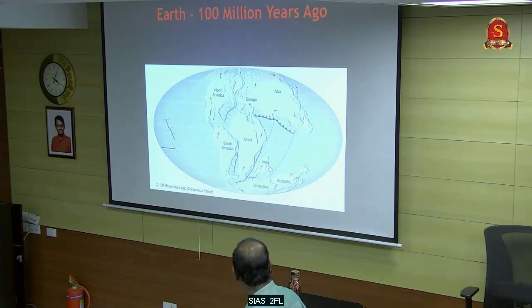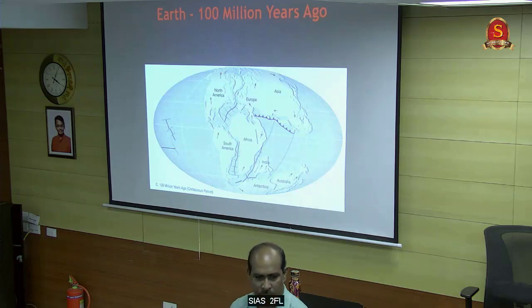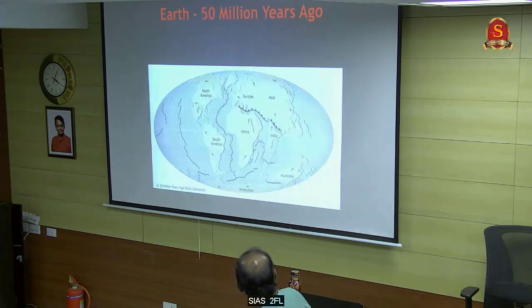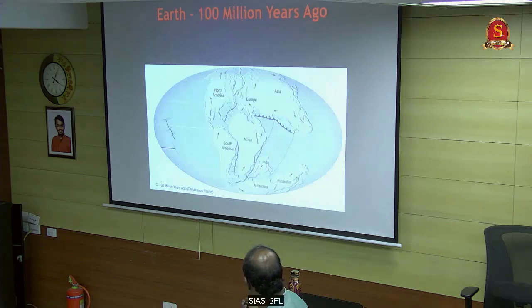Due to the convergent margin, India is moving towards the north-northeast. About 100 million years ago, Sri Lanka was pulled apart from India. India moved northward - 50 million years before you can see this structure increasing compared to before.